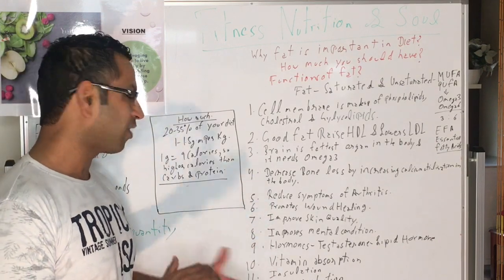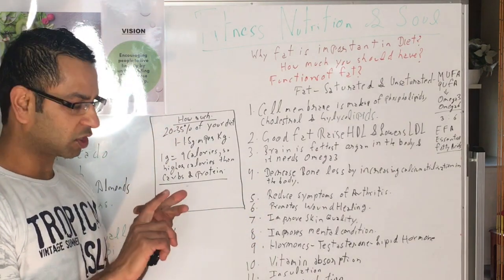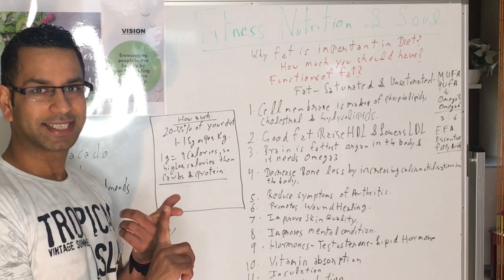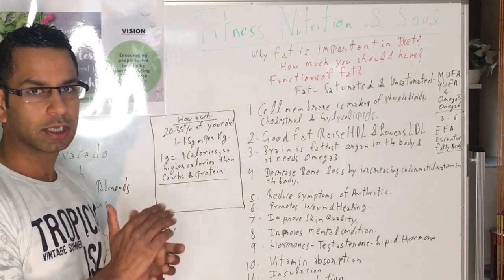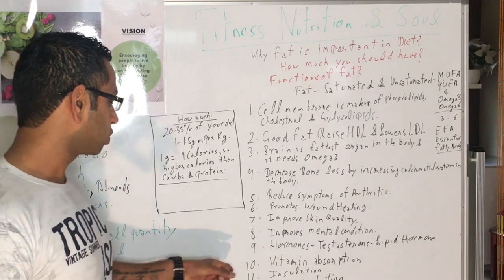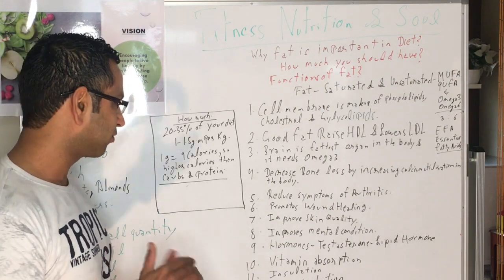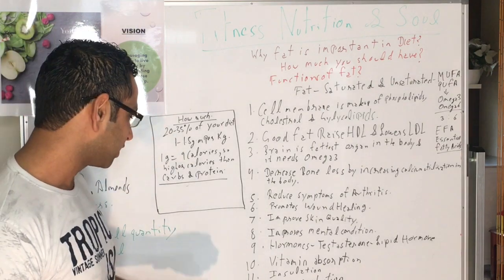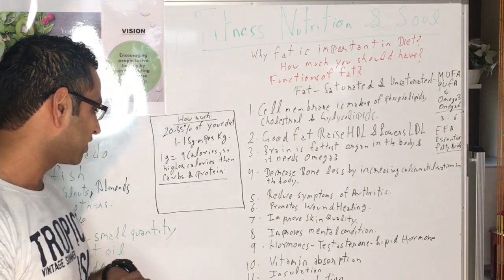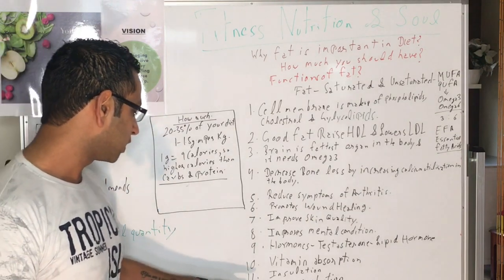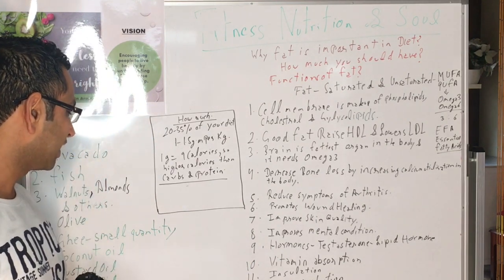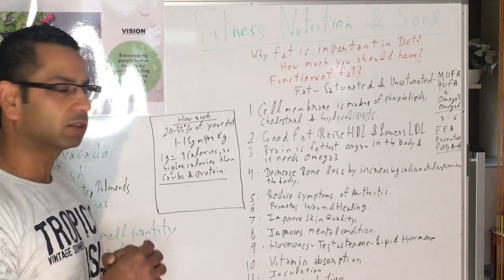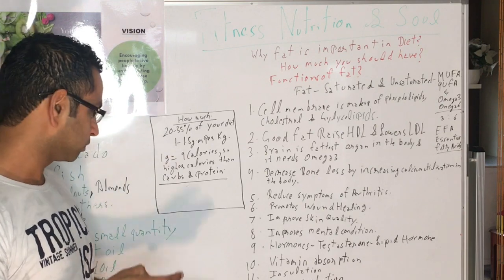Function number ten is fat-soluble vitamin absorption, such as vitamin A, vitamin D, vitamin K, and vitamin E. These are all fat-soluble vitamins, so they don't absorb properly if you don't have fat in your diet. The next function is it provides insulation, especially if you live in cold temperatures.